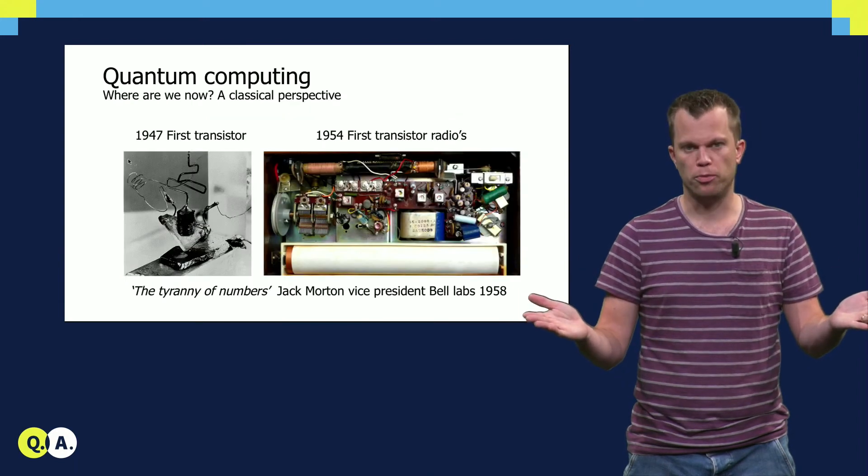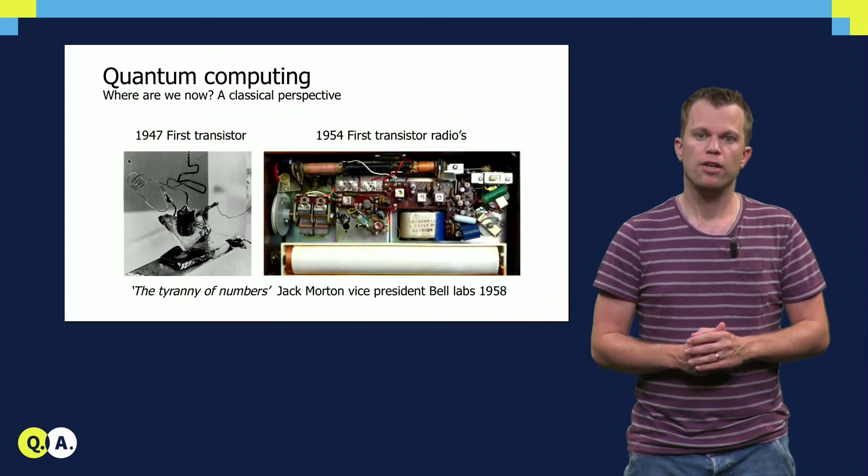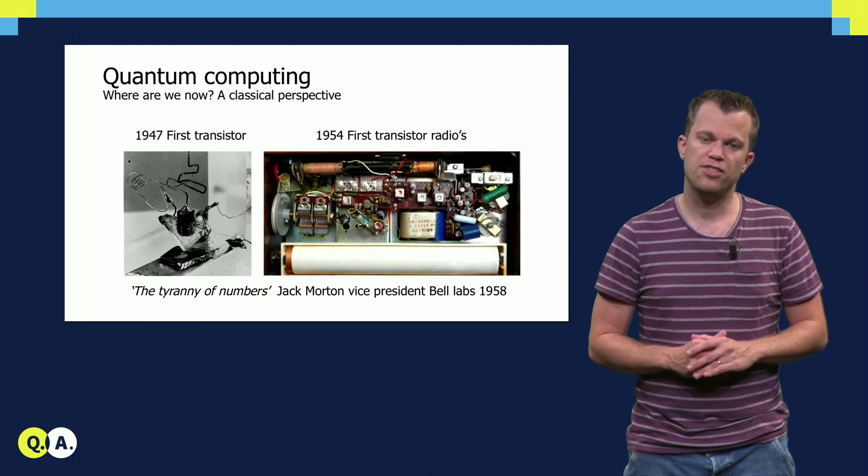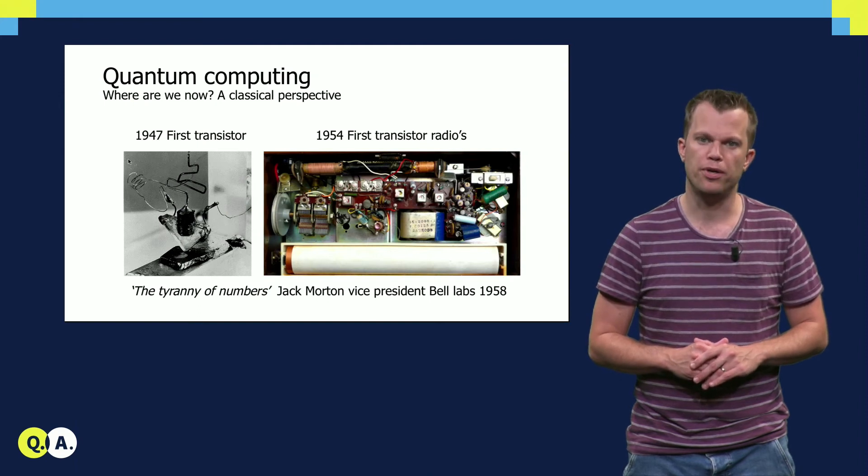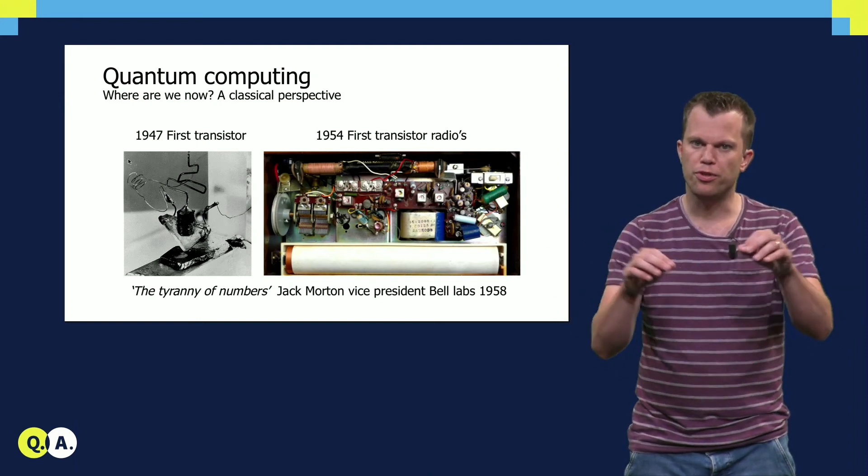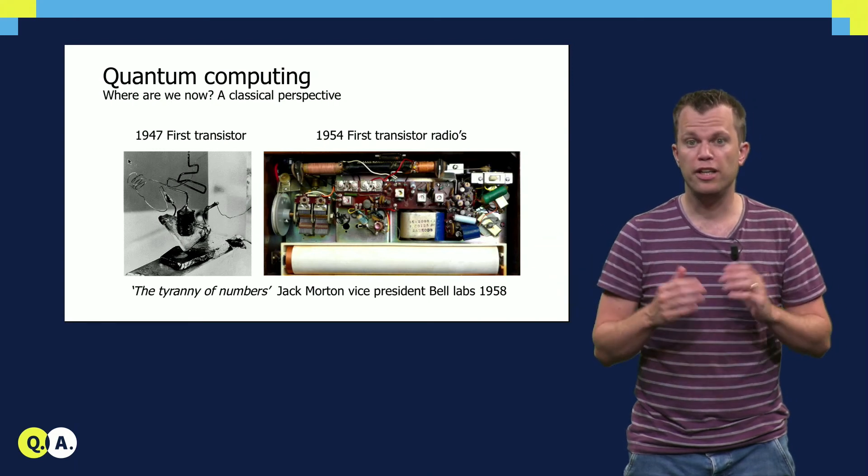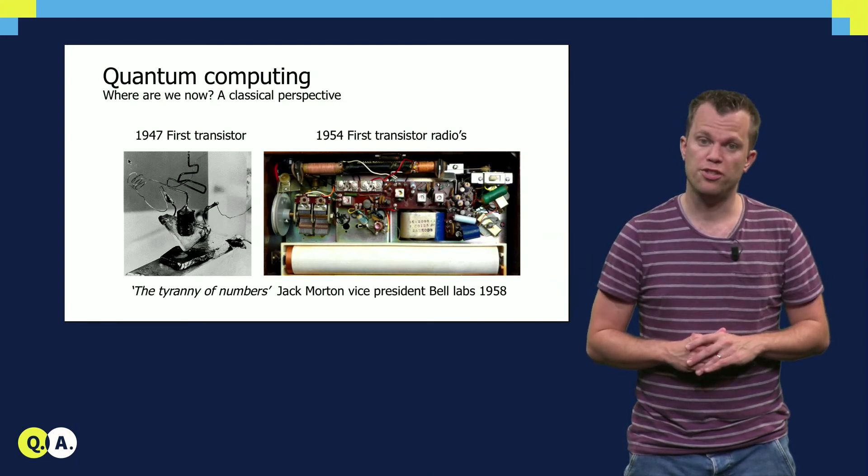Where are we now with quantum computing? To answer this question, let's take a classical perspective. In the 1950s, electrical systems contained many components, each requiring to solder to numerous others. This clearly prevented to go to large numbers.